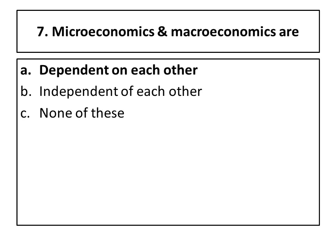Seventh question: microeconomics and macroeconomics are — A) dependent on each other, B) independent of each other, C) none of these. Both subjects are dependent on each other. Many ideas of microeconomics we implement in macroeconomics on a large scale, so we cannot separate these subjects. The right answer is A.